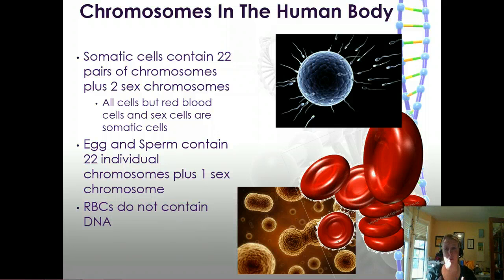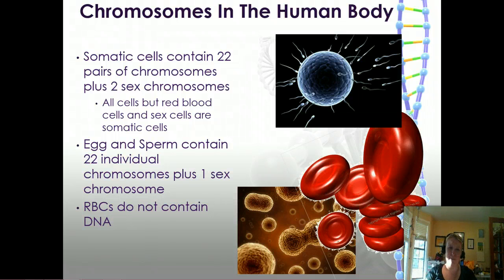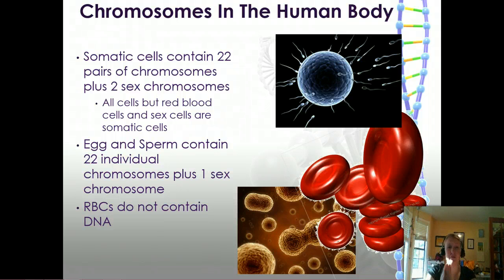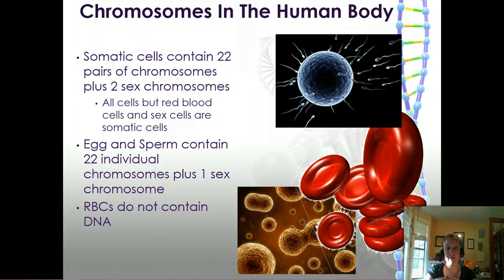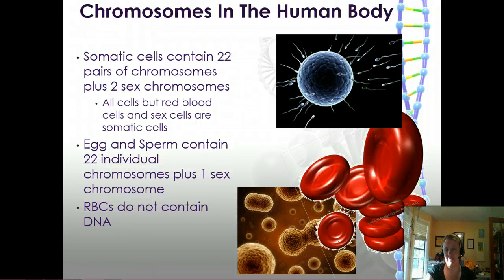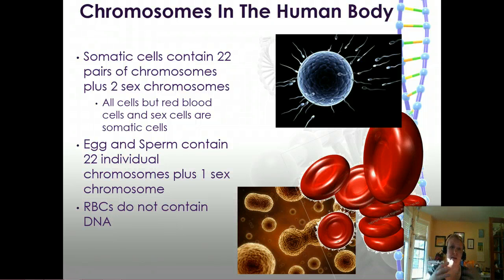Chromosomes in the human body — hopefully most of this is a reminder. We have 22 pairs, meaning we're diploid: two number 1s, two number 2s, two number 3s, and so on. We have 22 pairs of normal chromosomes plus two sex chromosomes — women have two Xs, and men have an X and a Y. Red blood cells and sex cells vary on this: red blood cells don't have any DNA, and sex cells have half, carrying 22 chromosomes and one sex chromosome to be passed on.